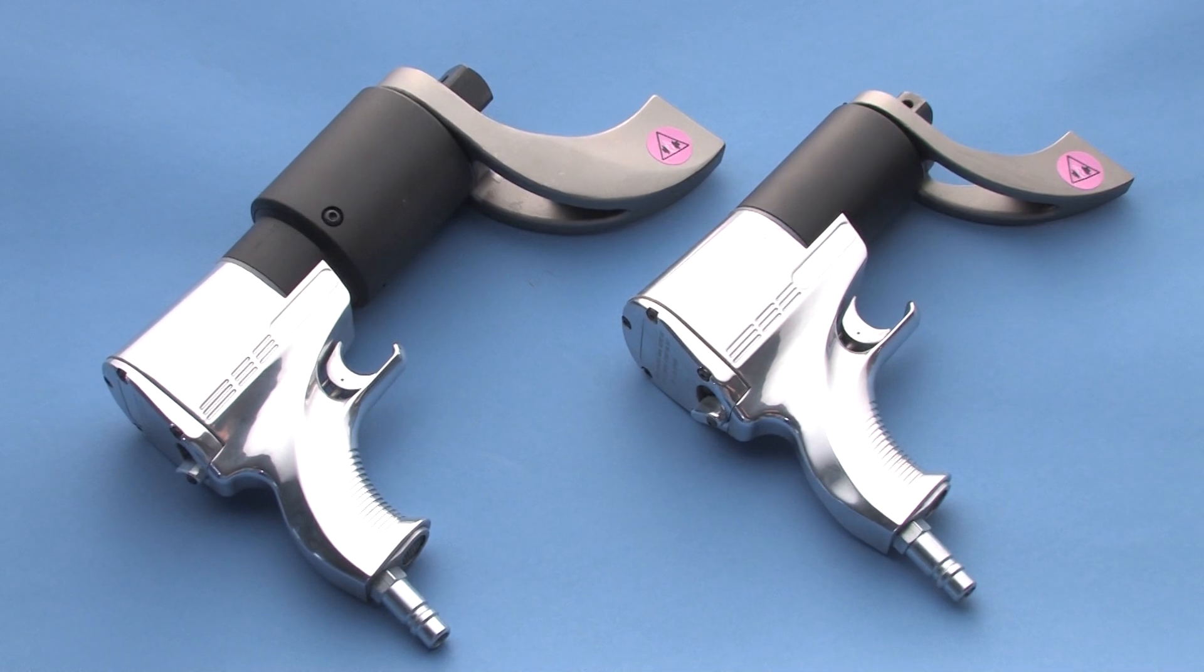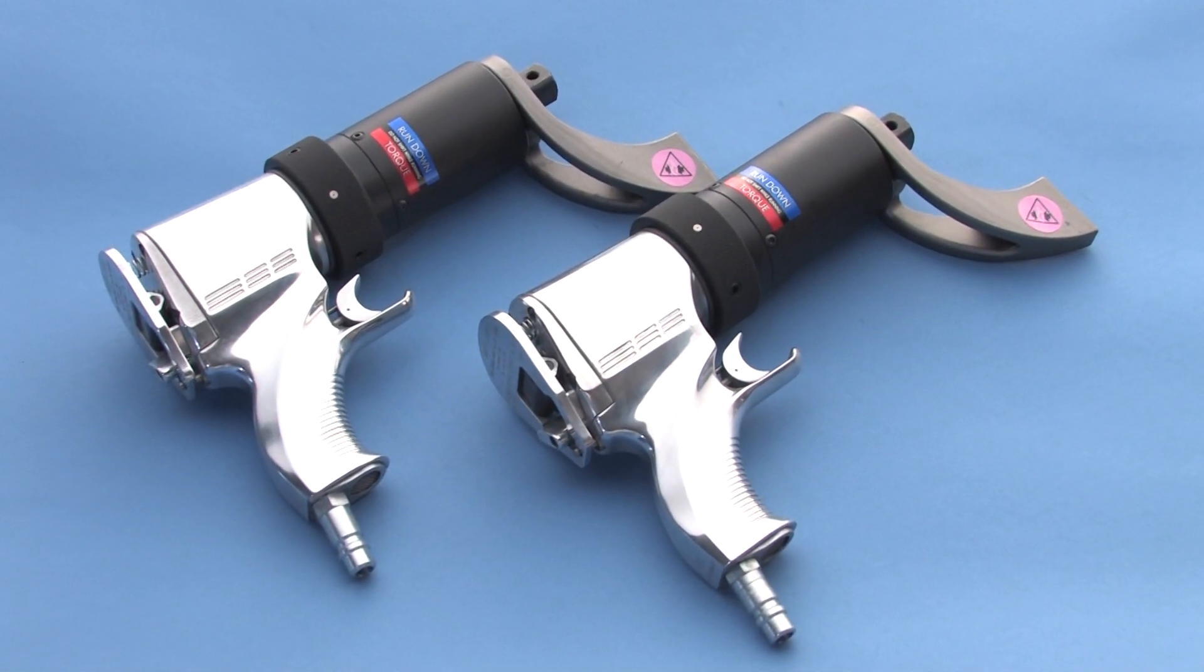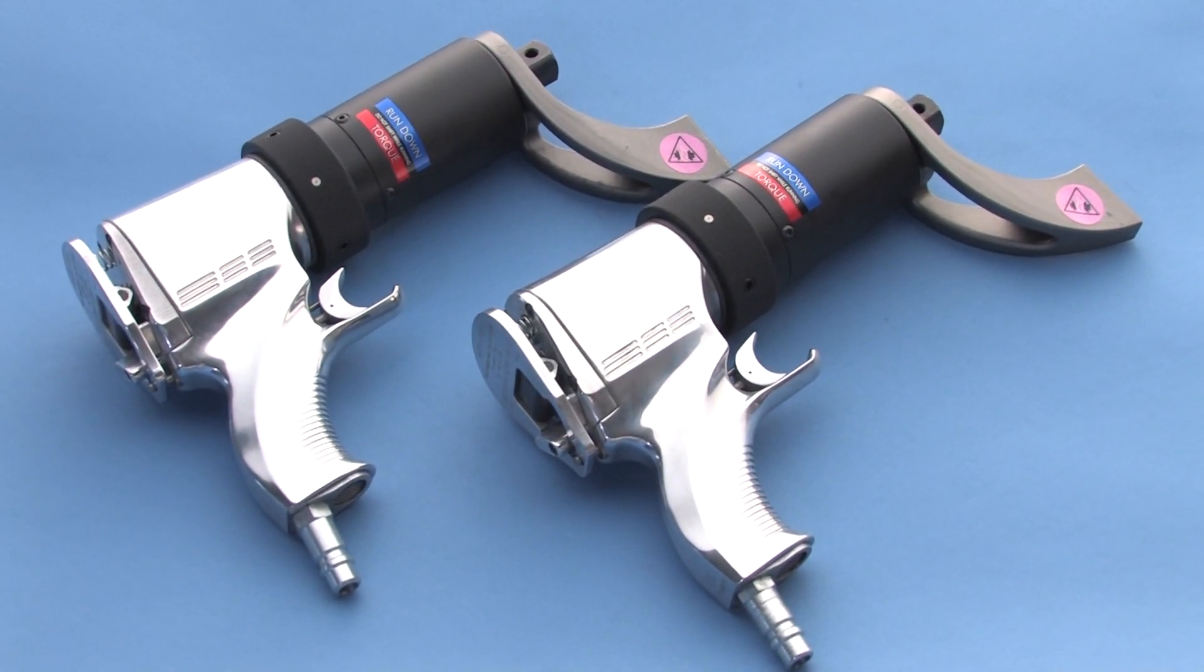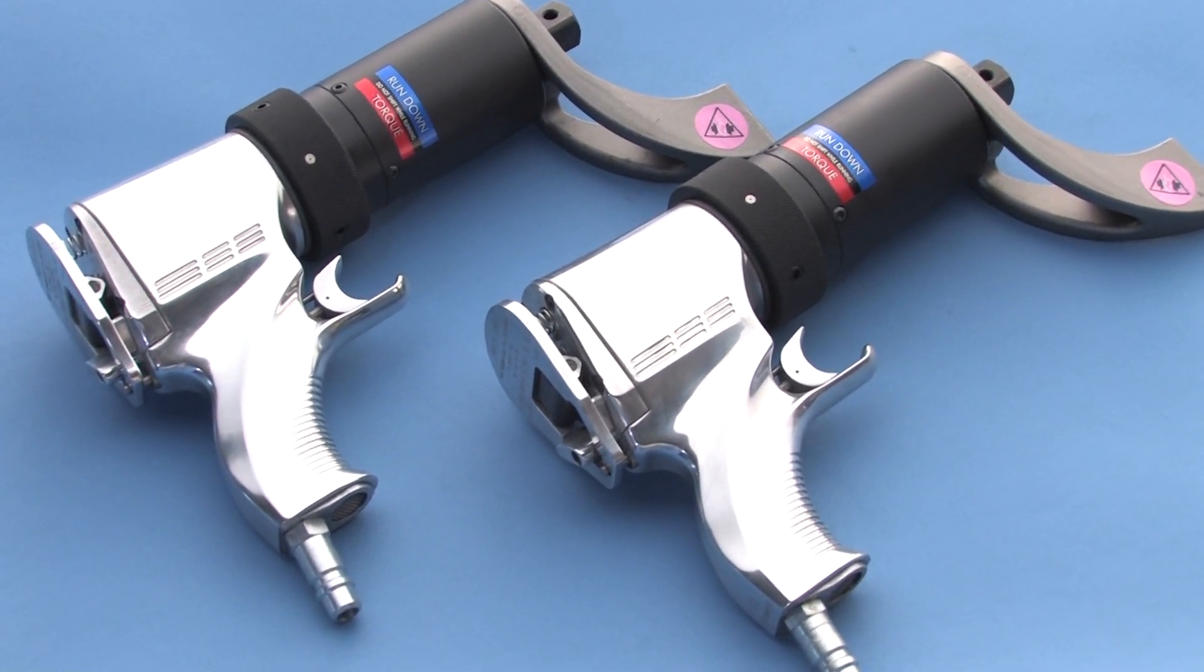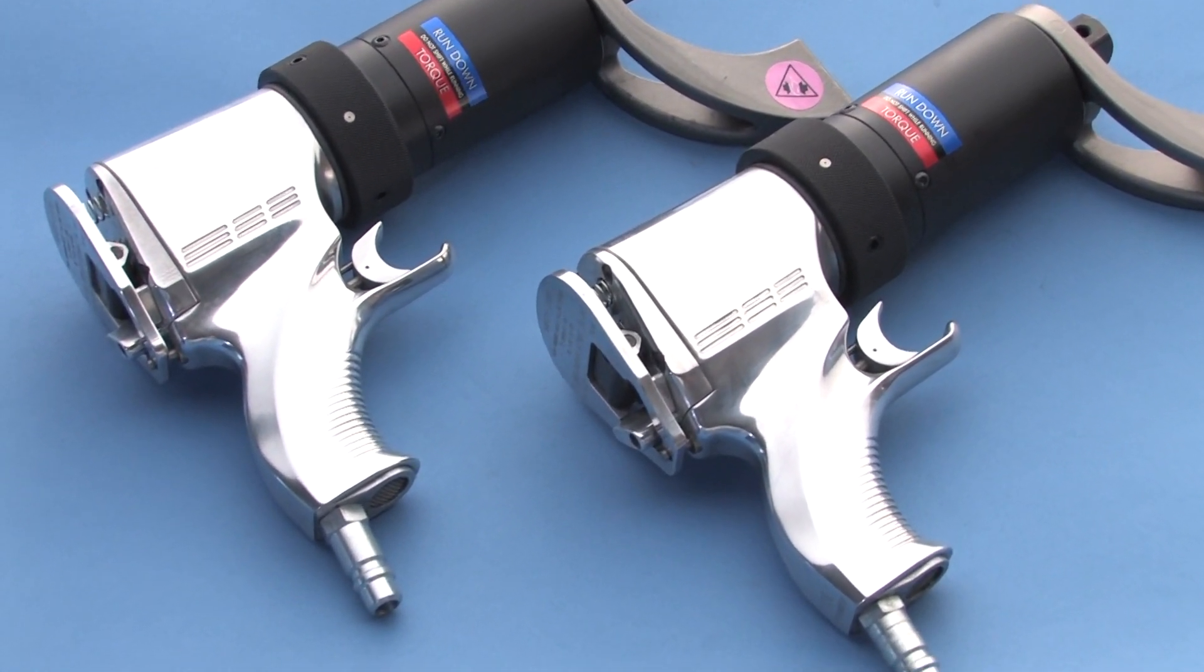J-GUNs come in both single and dual-speed models in a range of sizes and power ratings. The tools are numbered according to their maximum torque output in thousands of foot-pounds.